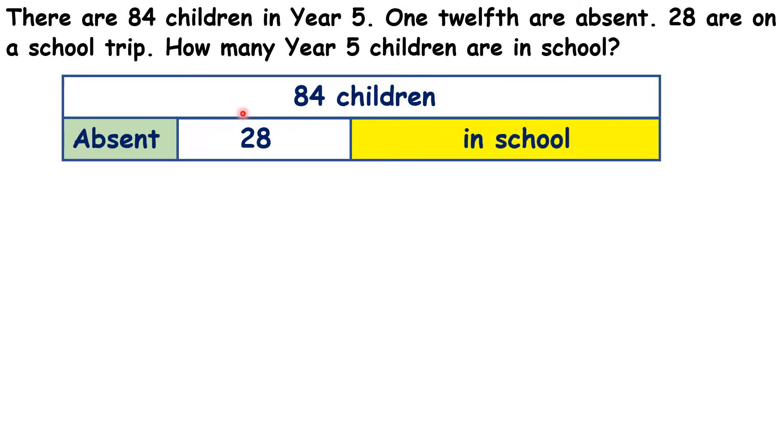So first of all, let's work out how many are absent. If 1 twelfth are absent, we need to divide our total by 12, so that means that 7 children must be absent.